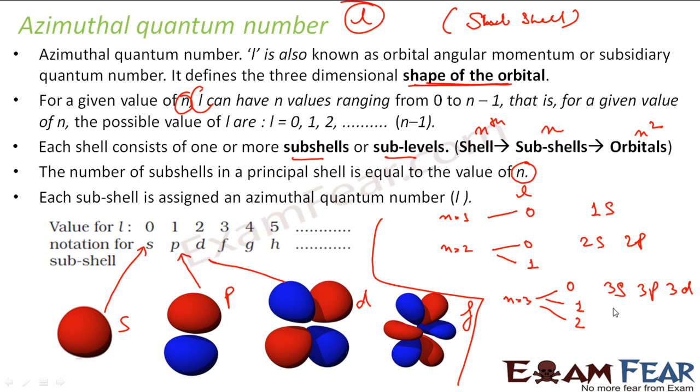Similarly, for 4 we will see we will have 4s, 4p, 4d, 4f. Like that it goes on. For a given value of n, my L can be 0 to n minus 1. But you see the count is same.